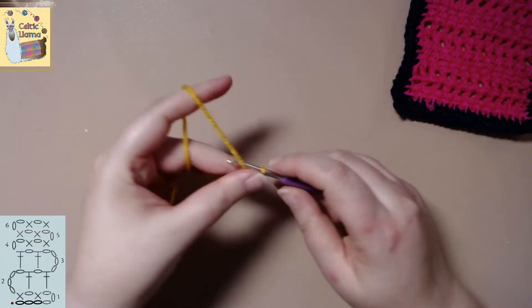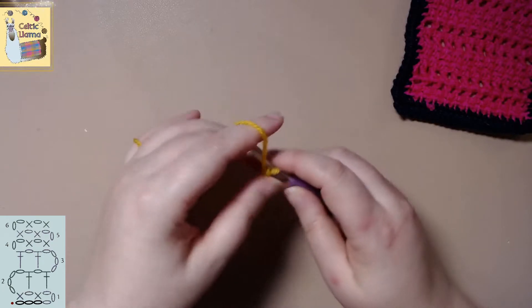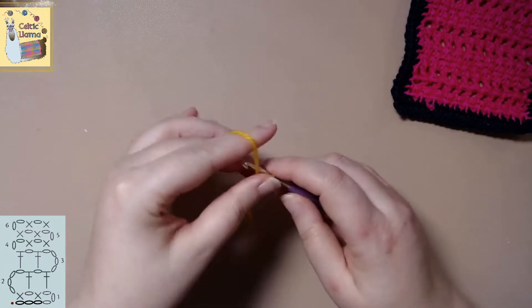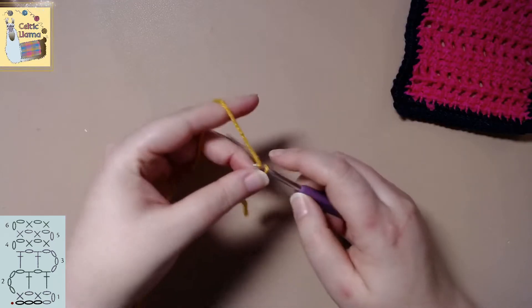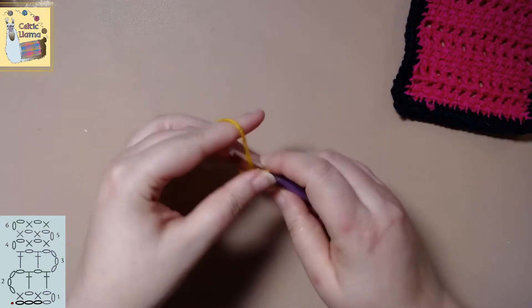For this pattern you will need to know how to do a single crochet and a double crochet. If you need help with that check down in the description below to find links on how to do those types of stitches.